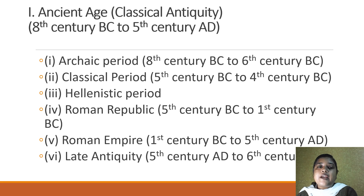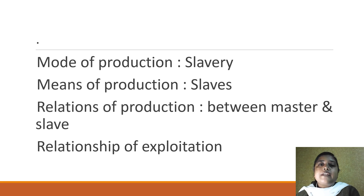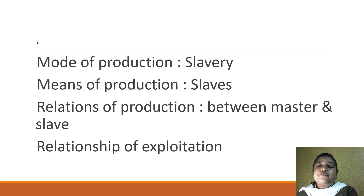The mode of production prevalent during the ancient age in Europe was slavery. The means of production was slaves — they did all the production activity of the economy and were the ones because of whom income was generated. However, the slaves were an exploited lot; the masters exploited the slaves to the fullest. Slaves were acquired through various means: they were either prisoners of war, bought and sold, or gifted. But the basic relationship between master and slave was that of exploitation.